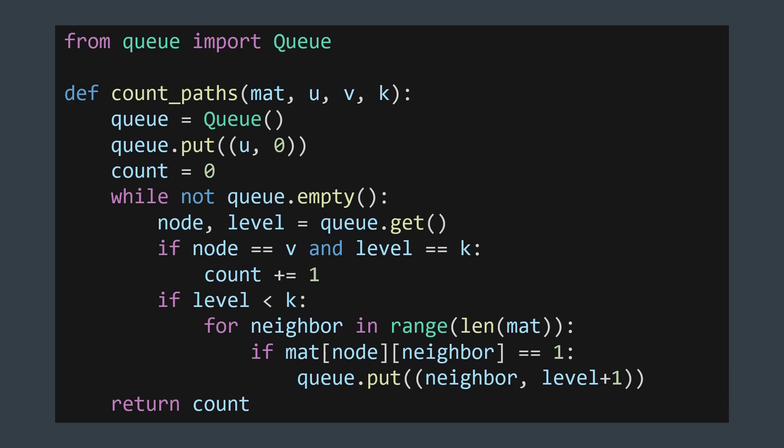However, this solution is exponential in time. Each node can produce n branches in the worst case, where n is the number of vertices. Done k times, we get an O of n to the power k time complexity, very slow. Let's discuss a better solution.